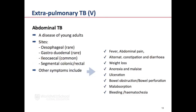Abdominal TB is generally a disease of younger people. The most common site is the ileocecal area, but any part of the gastrointestinal tract can be involved, including the oesophagus, the gastroduodenal area, colonic areas, and the rectal and anal areas. Symptoms include fever, abdominal pain, alternating constipation and diarrhoea, weight loss, anorexia, and malaise. There may be ulceration in the upper or lower GI tract. When advanced, bowel obstruction and perforation may occur. Classical symptoms of malabsorption may be present, and both upper and lower GI bleeding can occur.